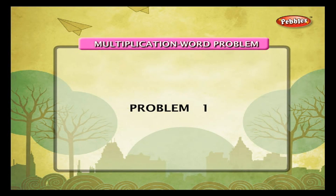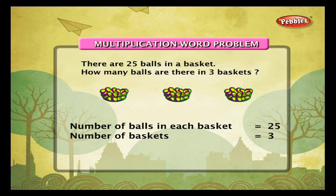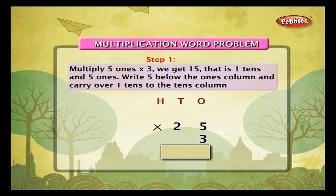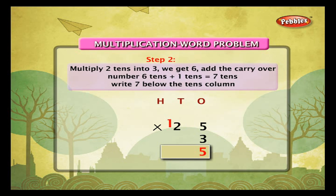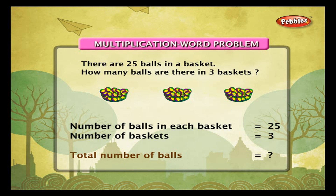Word problem 1. There are 25 balls in a basket. How many balls are there in 3 baskets? Number of balls in each basket is 25, number of baskets is 3. Step 1: multiply 5 ones by 3 — we get 15, that is 1 ten and 5 ones. Write 5 below the ones column and carry over 1 ten. Step 2: multiply 2 tens by 3 — we get 6. Add the carry over: 6 tens plus 1 ten is 7 tens. Write 7 below the tens column. Thus, 25 into 3 is equal to 75. Therefore, the total number of balls is 75.